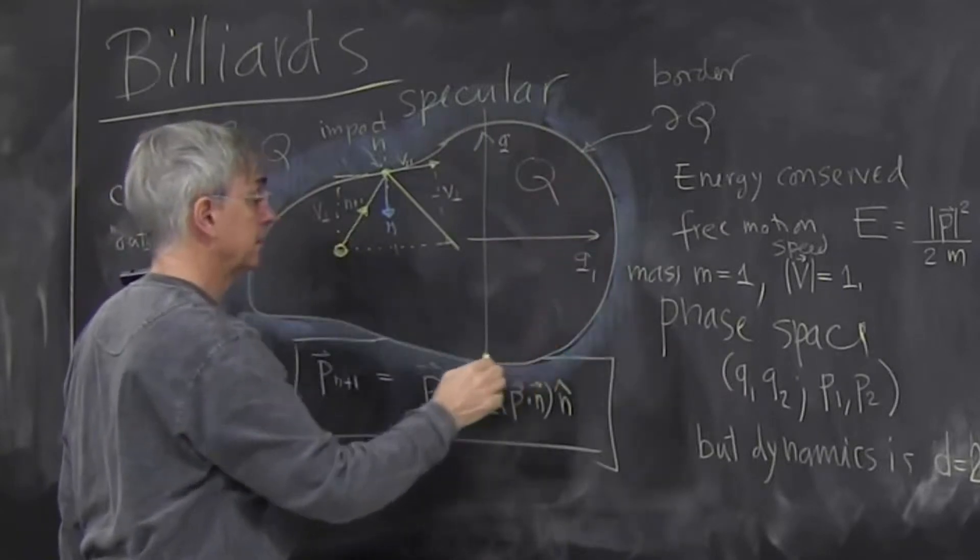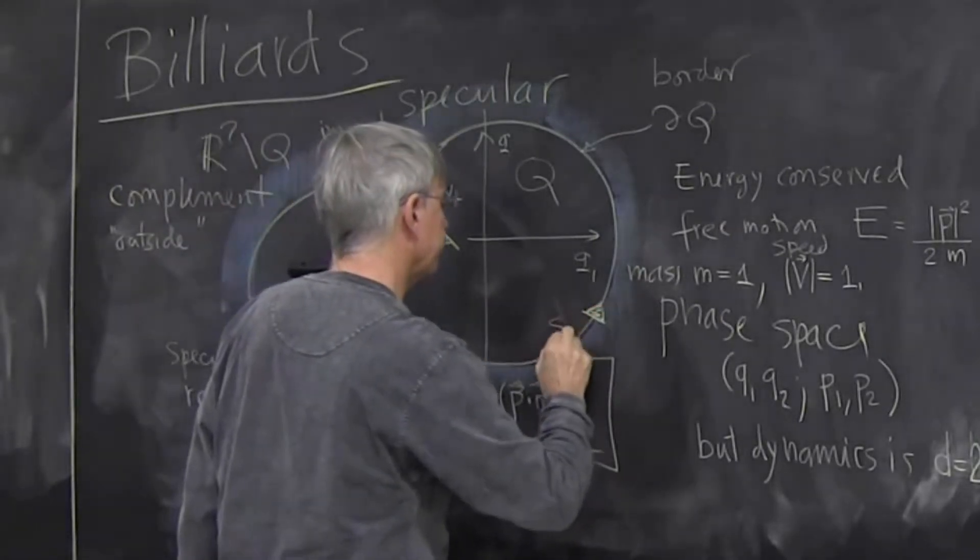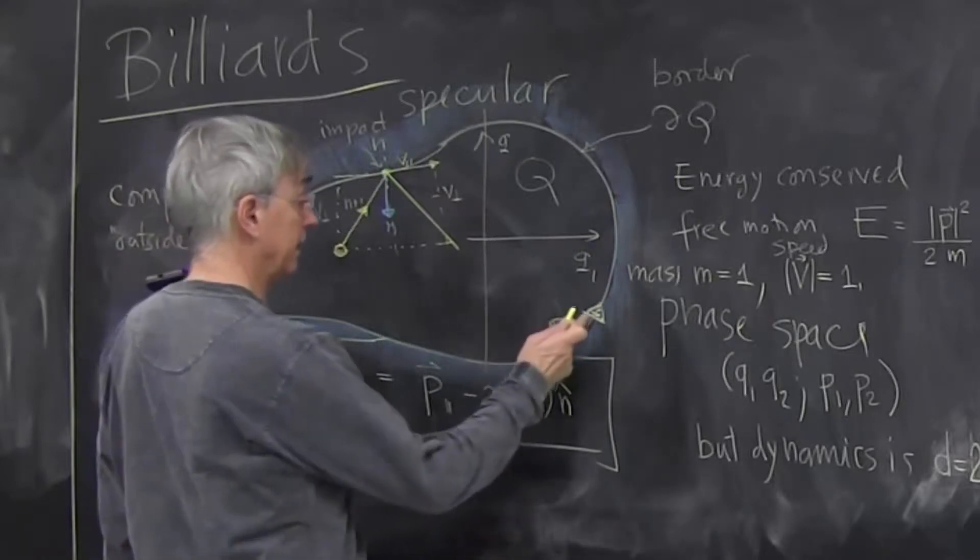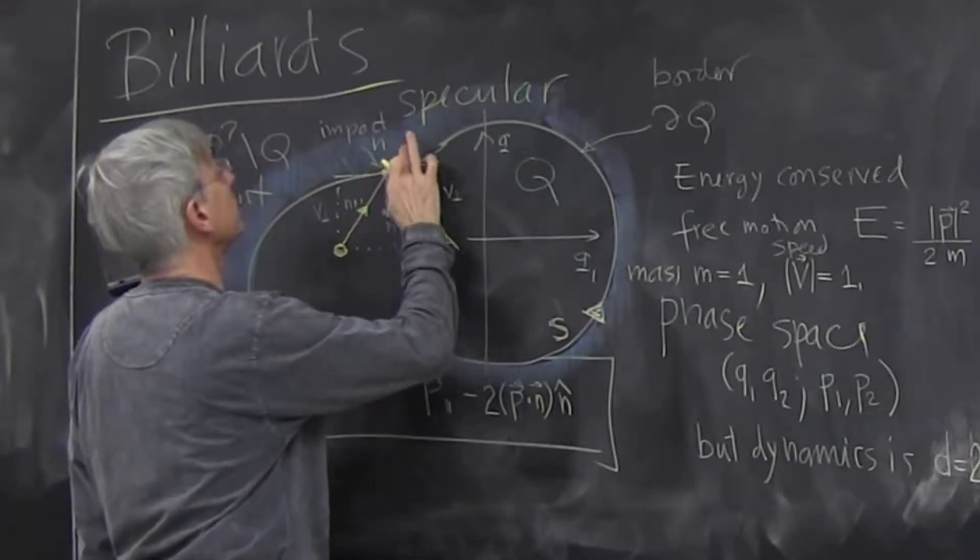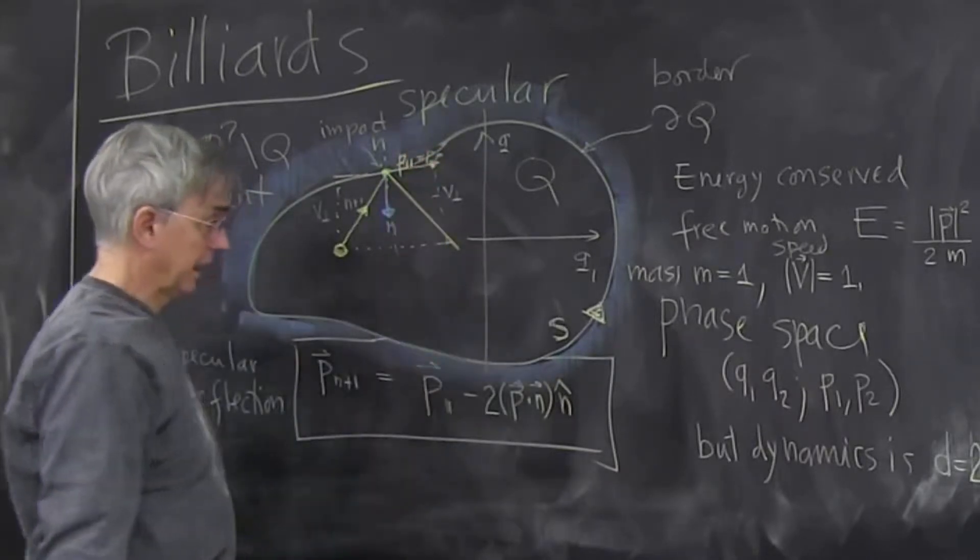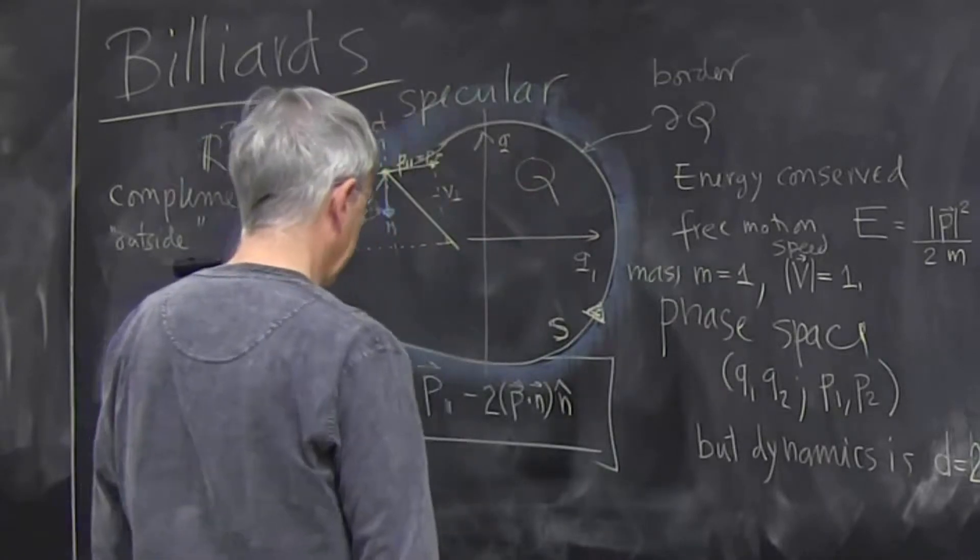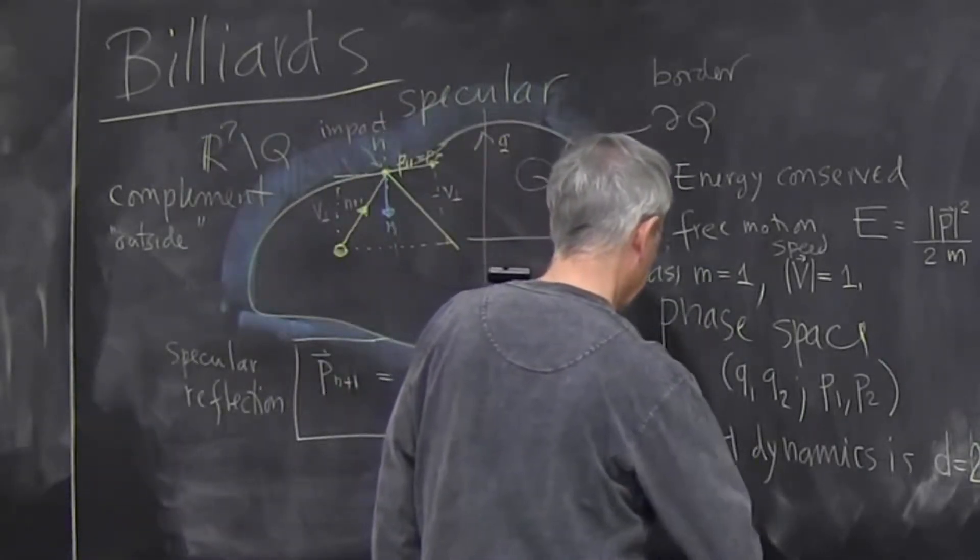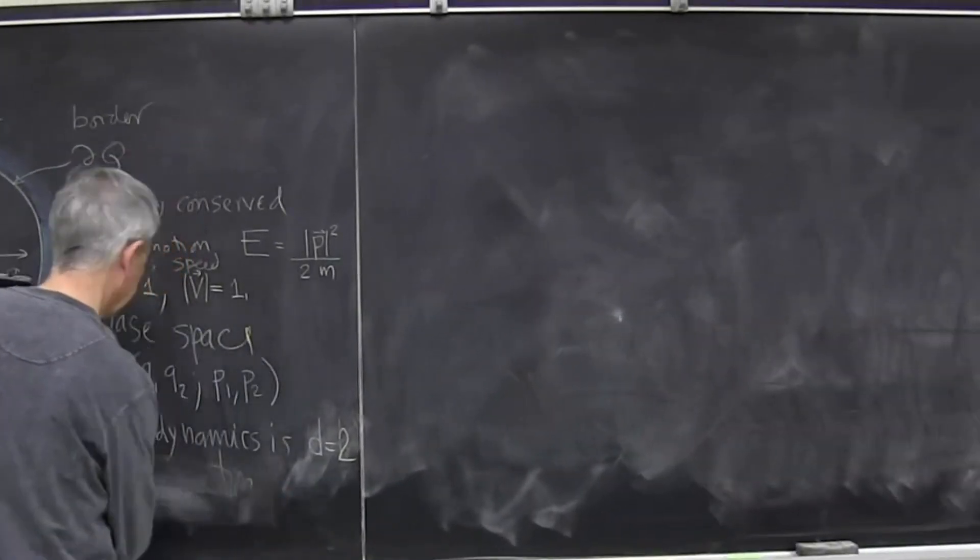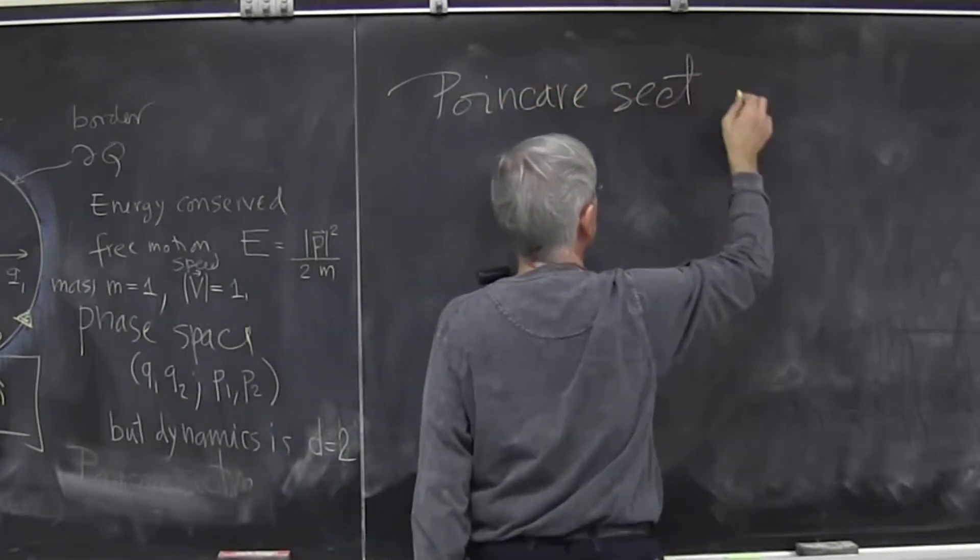There is a wall of the billiard, so that we can parametrize by some length s, because it's usually some curvilinear wall. And at the point of impact, I have parallel momentum, which I'll just call p then. And because the velocity vector is 1, I know what the transverse momentum is, so I have to specify only one component of the momentum.